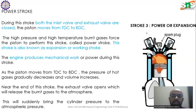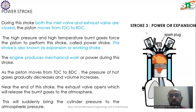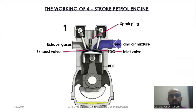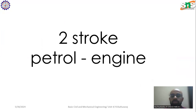Once the spark plug starts to give spark, the air-fuel mixture starts to burn, and a huge amount of energy is released. That energy pushes the piston down, moving it from top dead center to bottom dead center. Then the burned air-fuel mixture is pushed outside through the exhaust stroke — the exhaust valve opens and it is pushed outside. This is the working of the four-stroke petrol engine. We will see the working of a two-stroke petrol engine in the next lecture. Thank you.